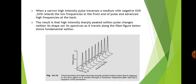The result is that the high intensity, sharply peaked soliton pulse changes neither its shape nor its spectrum as it travels along the fiber. The figure below shows the fundamental soliton — you can see that the shape is maintained throughout as the distance along the fiber increases. This shows the characteristics of a high intensity soliton pulse subject to the Kerr effect (SPM) traveling through a non-linear dispersive fiber with a negative GVD parameter.